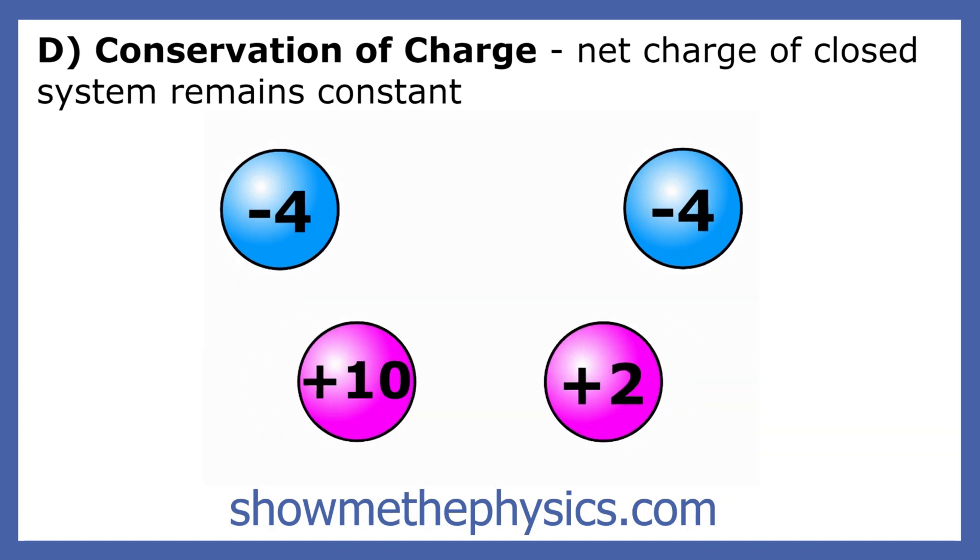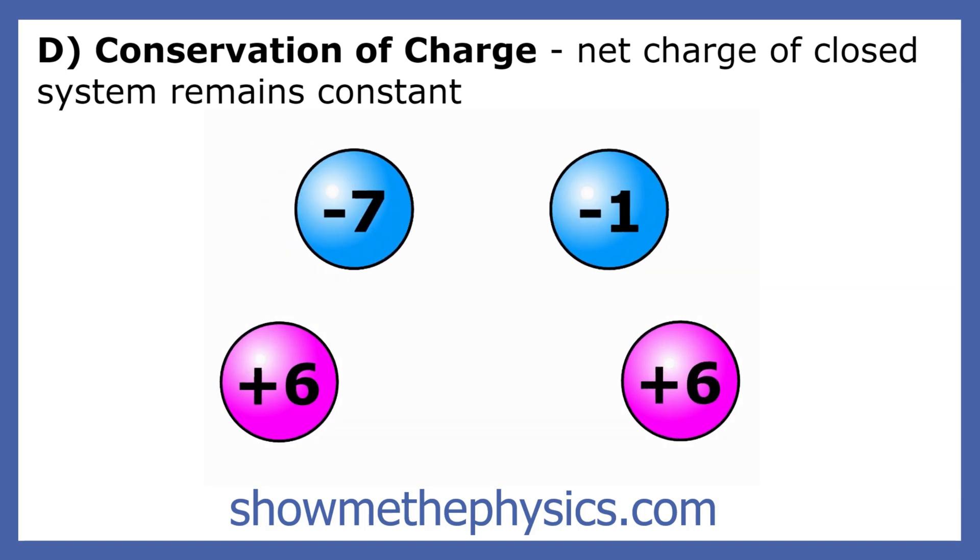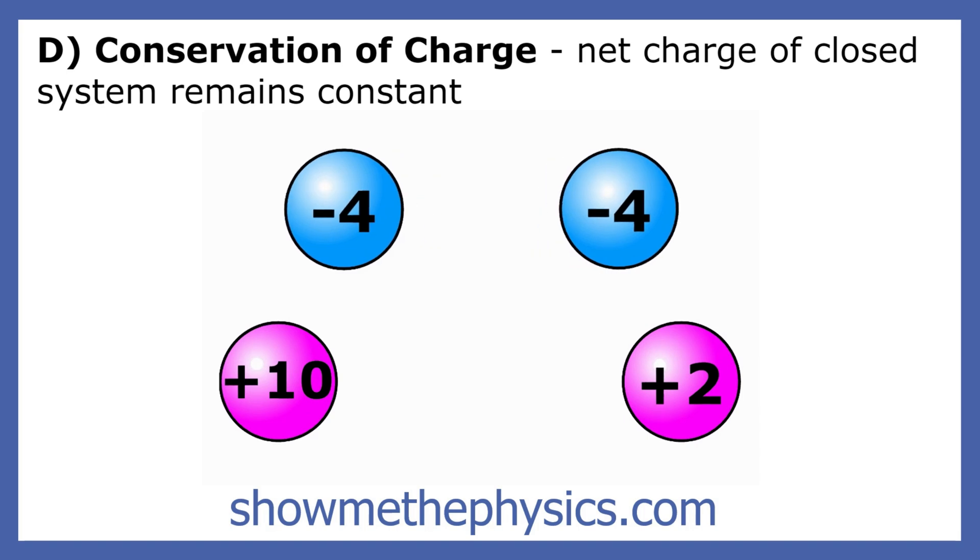So, when one object gains electrons, the other object must lose the same number of electrons. This is called the conservation of charge.